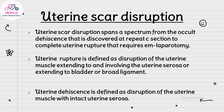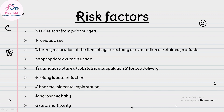Uterine scar dehiscence spans a spectrum from occult dehiscence discovered at repeat cesarean section to complete uterine rupture requiring emergency laparotomy. Uterine rupture is defined as disruption of uterine muscle extending to and involving the uterine serosa, or extending towards the bladder or broad ligament. Uterine dehiscence is disruption of uterine muscle with intact uterine serosa. Risk factors include previous uterine scar, previous cesarean section, uterine perforation during hysterectomy or evacuation of retained products, inappropriate oxytocin use, traumatic rupture from obstetric manipulation or forceps delivery, prolonged labor induction, abnormal placental implantation, and macrosomic baby.